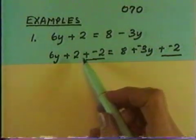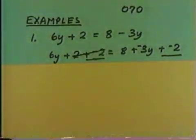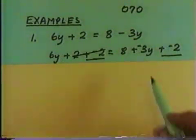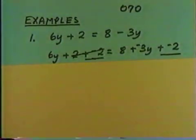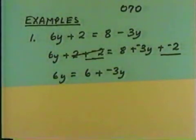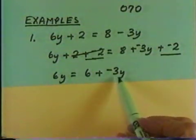On the left-hand side, the 2 and negative 2 add out to 0, so in effect they cancel, leaving us 6y. On the right-hand side, the similar terms 8 and negative 2 can be combined to get 6. So this gives us 6y = 6 + (-3y).